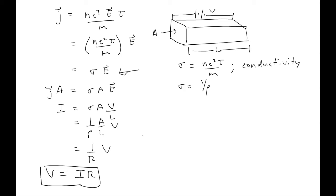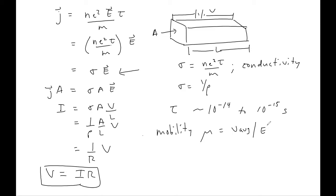Typical values of the relaxation time tau in metals are of order 10^{-14} to 10^{-15} seconds. This is typically extracted via measurements of the conductivity and density in a metal. Another important parameter used in the Drude model, especially for two-dimensional systems, is the mobility mu, defined as the magnitude of the average velocity divided by the magnitude of the electric field. The conductivity sigma equals n e mu.